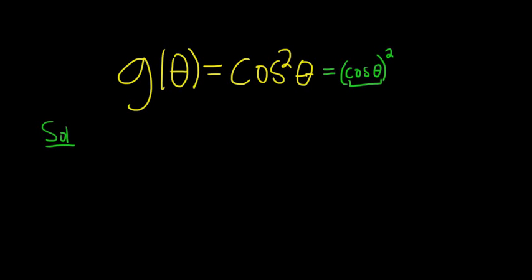So the cosine function is your inside function and it's being squared. So we're going to use the chain rule.